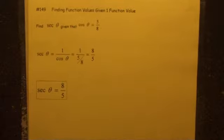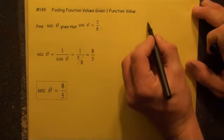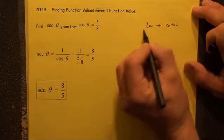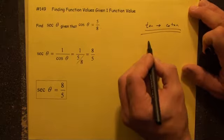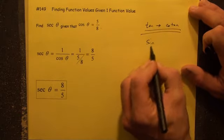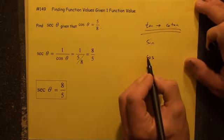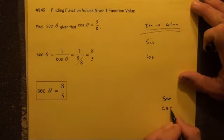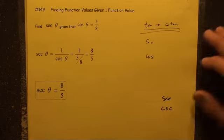We know that secant and cosine are trig functions. In fact, the way I used to remember it was this. Obviously, tan and cotan, I think that's pretty straightforward. But how do we know which one's which? Which sine, cosine, which one's which? We have secant and we have cosecant. The way I do it is this.